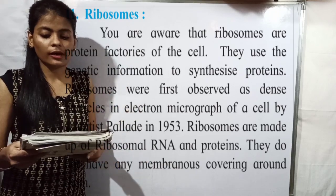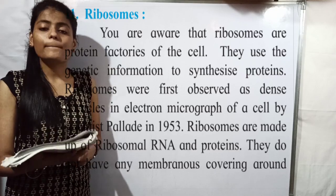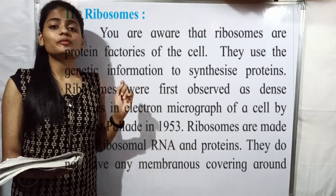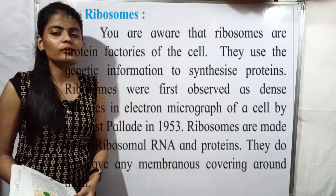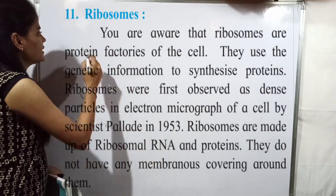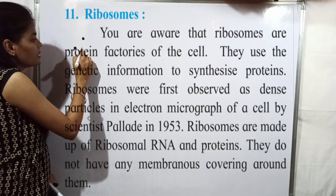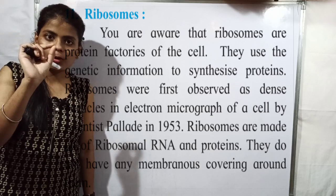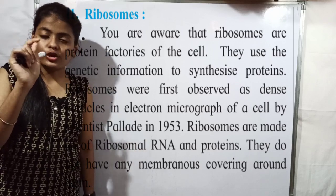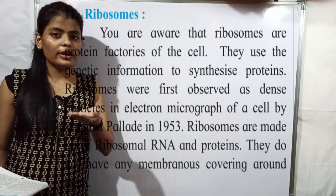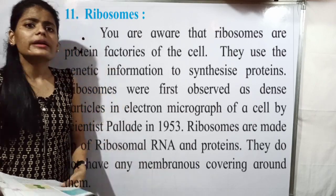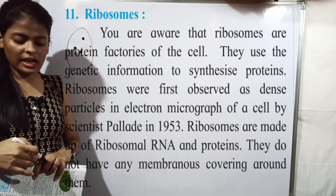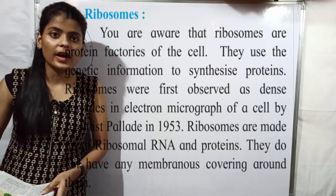Ribosomes were first discovered as dense particles in an electron micrograph of a cell by scientist Palade in 1953. When observed under an electron microscope, the cell showed many dark spots. These are what we call dense particles — where many molecules are found concentrated in one place, appearing dark under the microscope.